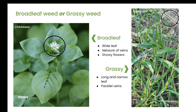Some things are obvious. Broadleaf has that wide leaf, as you can see in the chickweed. It has a network of veins spread out across that leaf. Most of them, although not all, have a showy flower. This doesn't necessarily have to be white like the chickweed here — it can be purple, yellow, or pink. Most of the time you'll see that flower because that's how this weed will propagate.